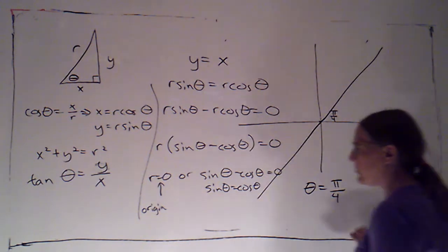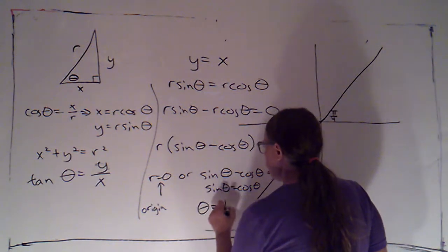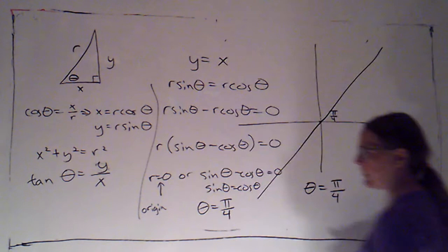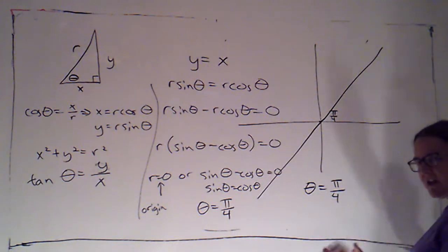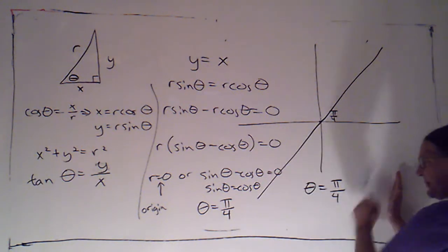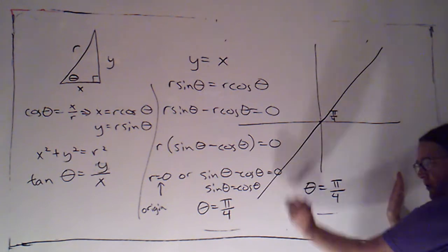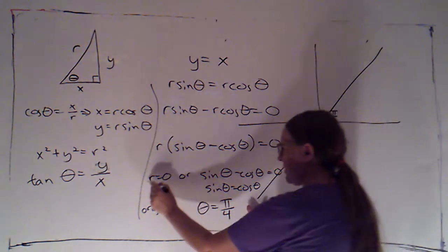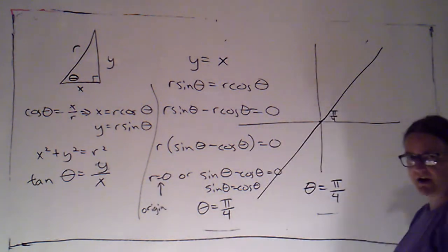If I'm trying to get this line, though, I can just pick one. I can pick theta equals pi over four. So it looks like when we just did this graphically, we just got this option, theta equals pi over four. Algebraically, we've got r is zero or theta is pi over four.